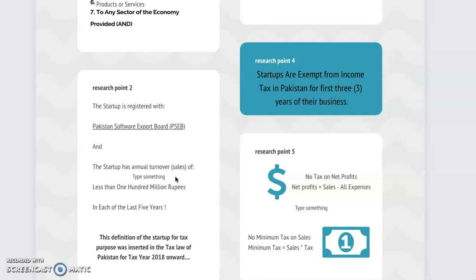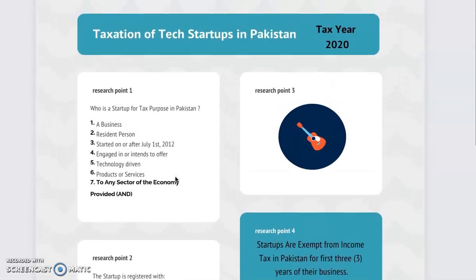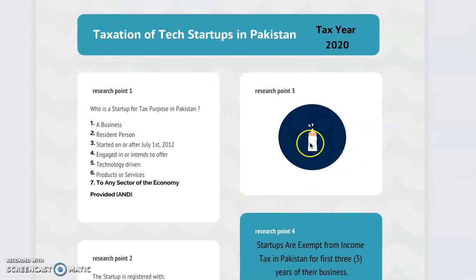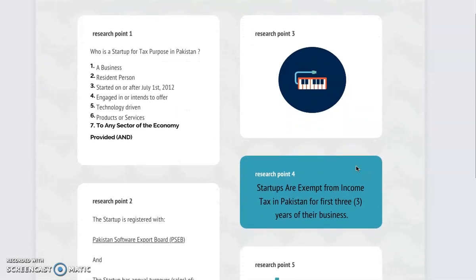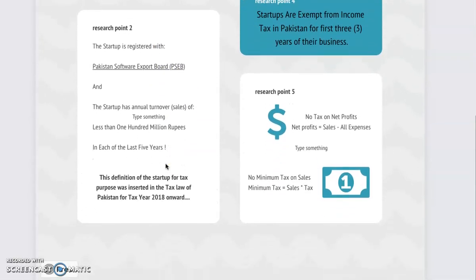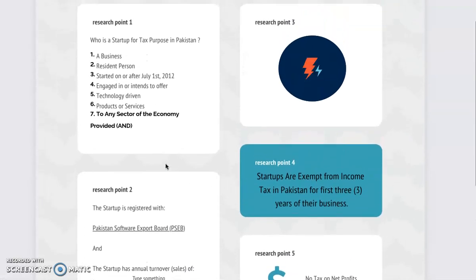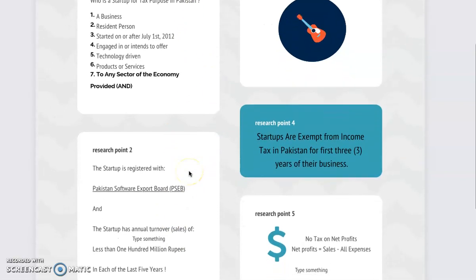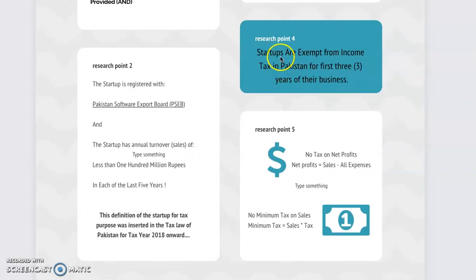The main point of this video is to make sense of this tax exemption. If you fulfill all of these requirements — and please note this is just an informational video, so consult your legal counsel before acting — then your startup in Pakistan will be exempt from income tax for the first 3 years of your business. The first year starts when you register with the Pakistan Software Export Board, which is an online and very easy process.